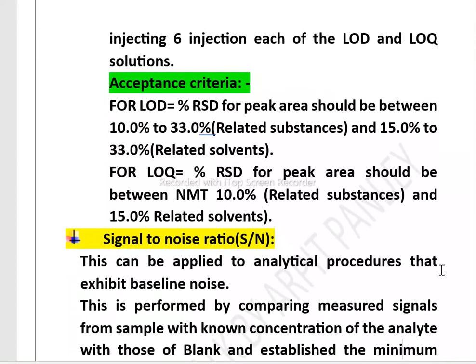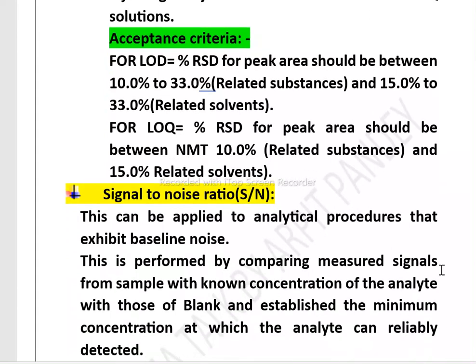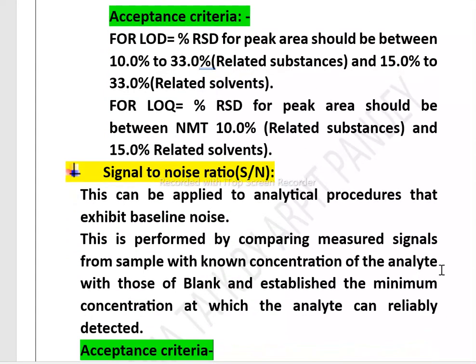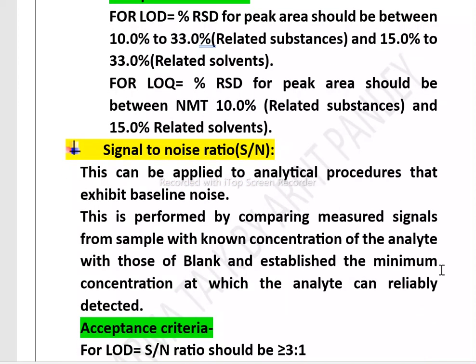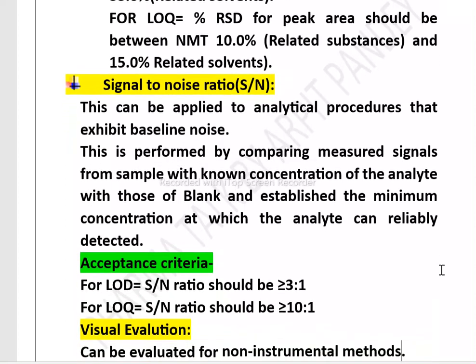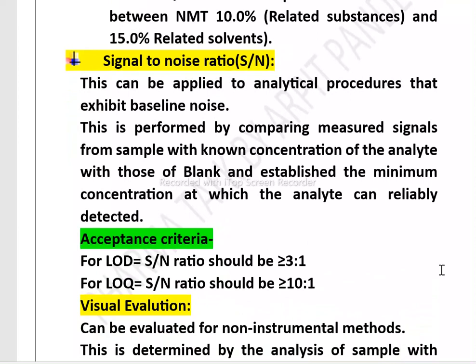If we determine LOD and LOQ using the signal-to-noise ratio method, the procedure is as follows: this can be applied to analytical procedures that exhibit baseline noise. It is performed by comparing the measured signal from a sample with a known concentration of the analyte against those of blank, and establishing the minimum concentration at which the analyte can be reliably detected. The acceptance criteria for LOD: the signal-to-noise ratio should be greater than or equal to 3:1.